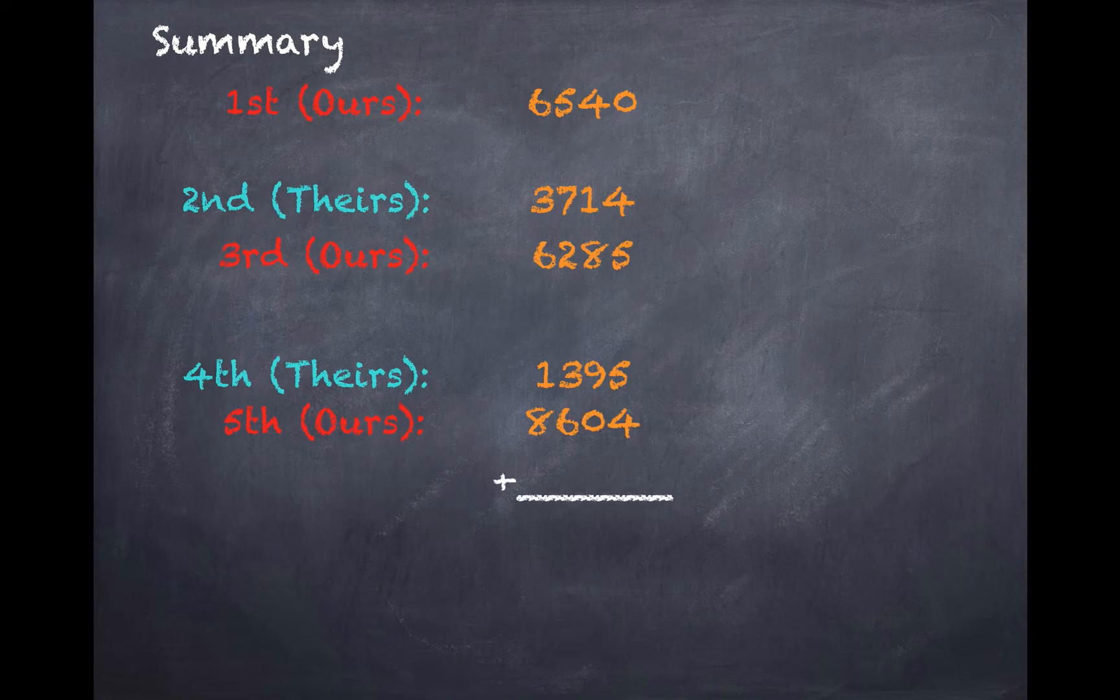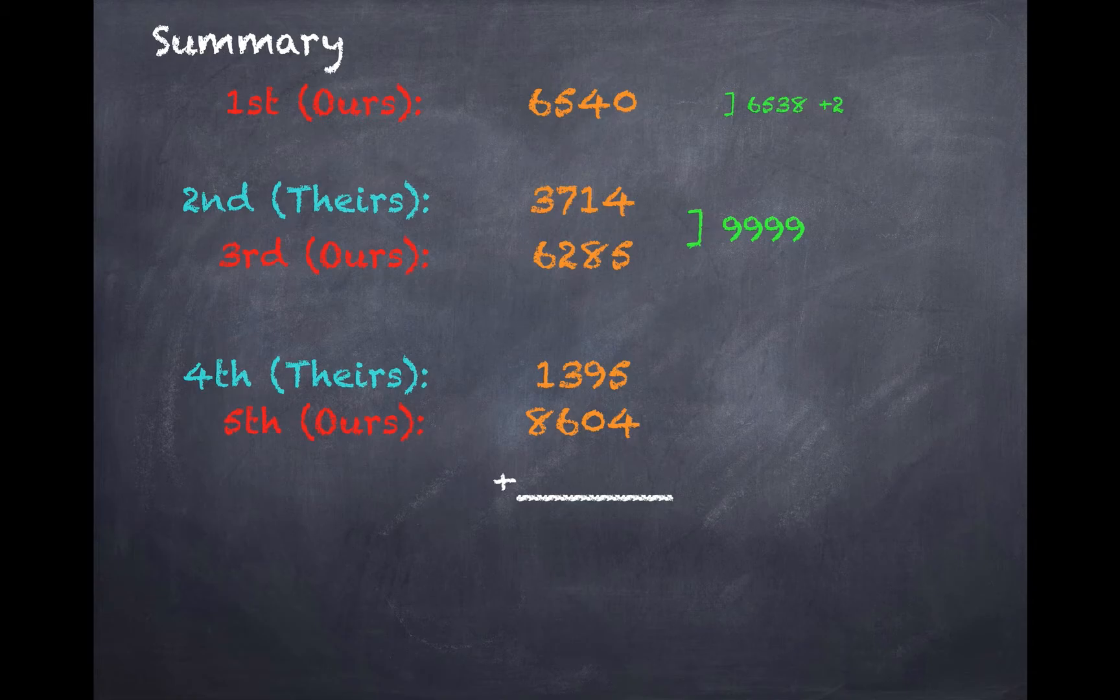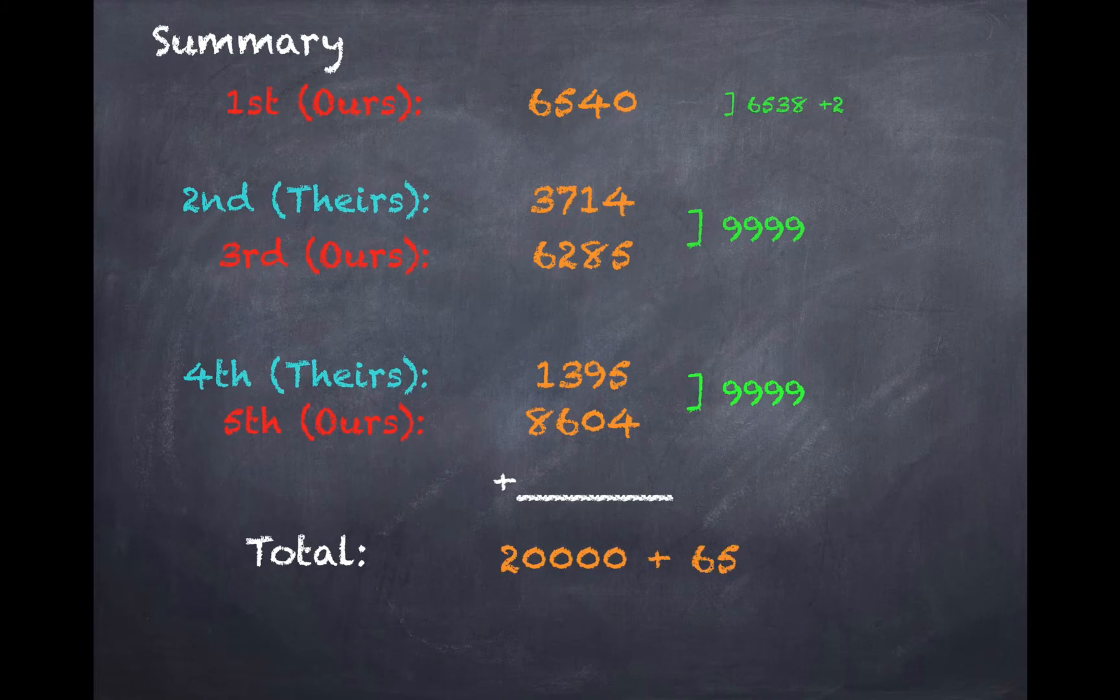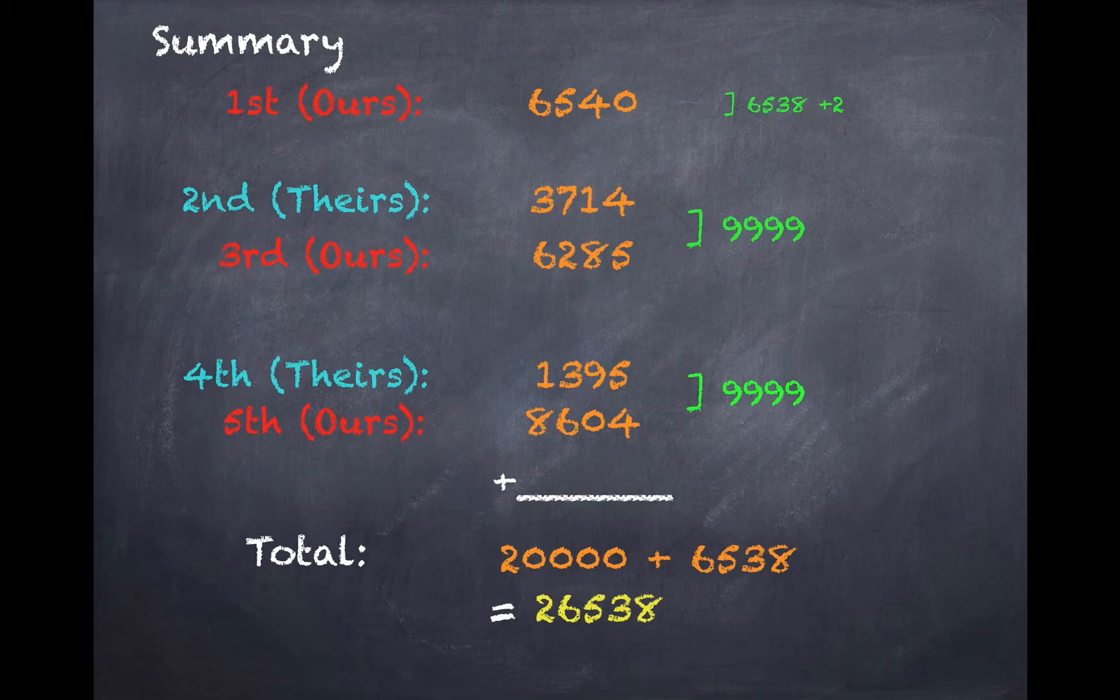So when we want to find the sum, let's first break it down for each individual part. So the first number is actually the sum of the last four digits of our prediction plus 2. The second and the third number add up to being 9999. Similarly, the fourth and the fifth number add up to being 9999 again. So when we sum up, it's actually 20,000 plus 6538, which adds up to being 26538, which is our prediction.